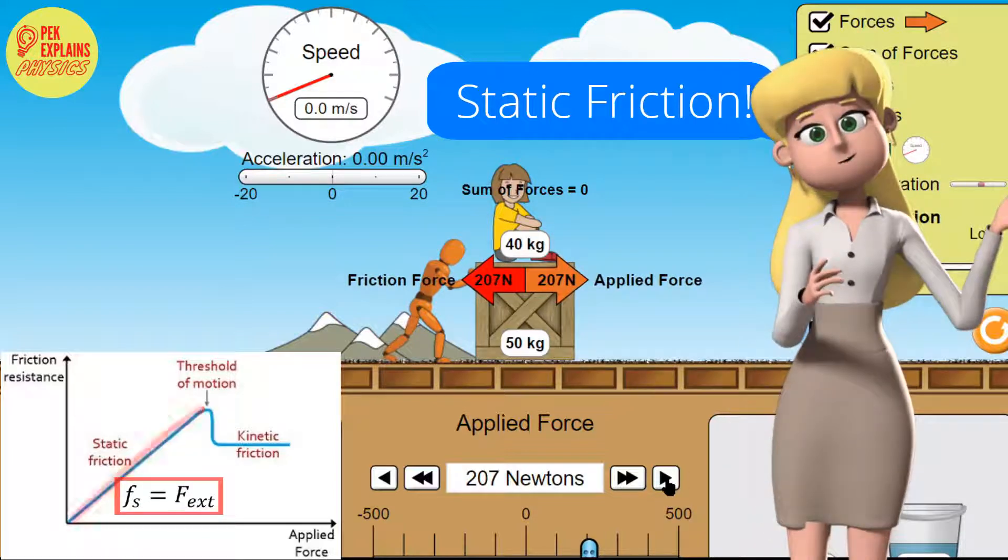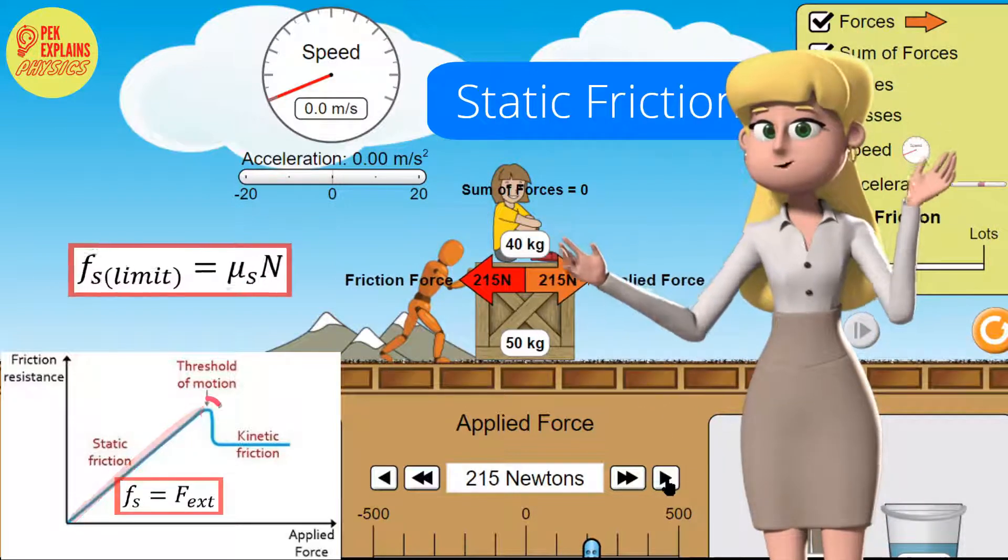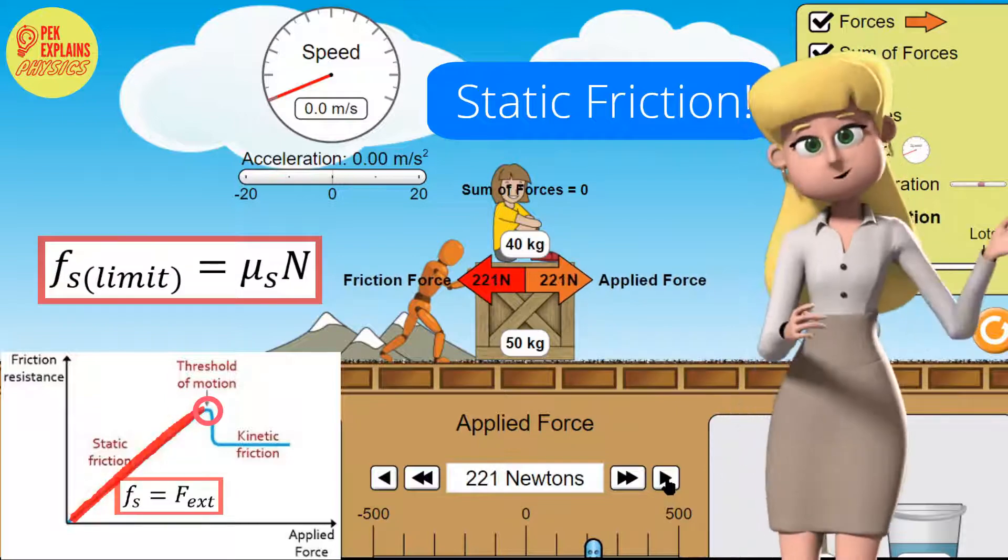Just before the crate starts to slide, the static friction reaches a maximum value of mu sn, 225 newtons.